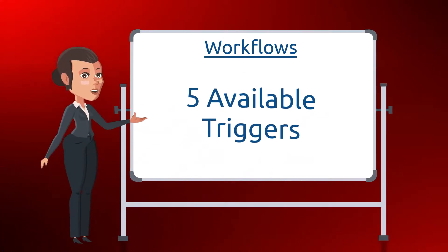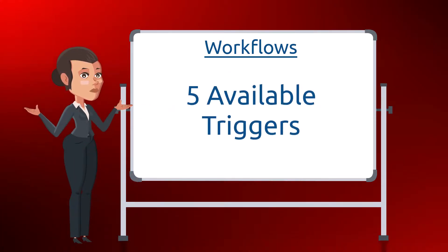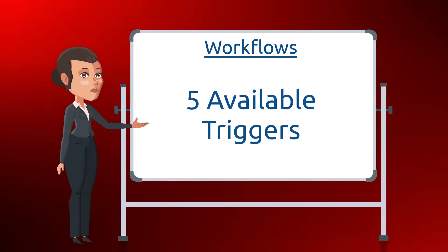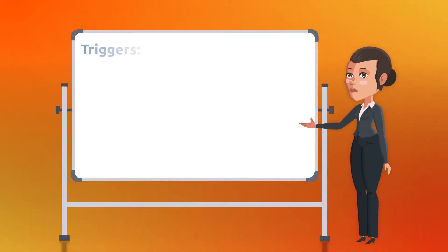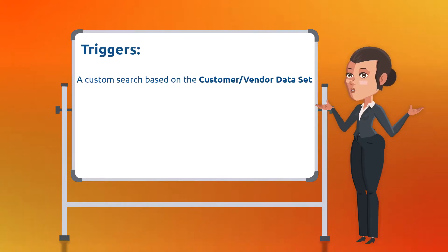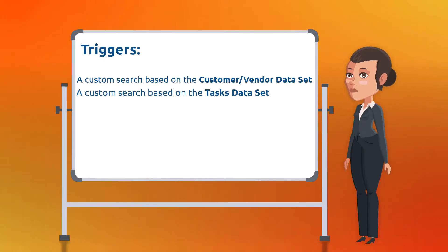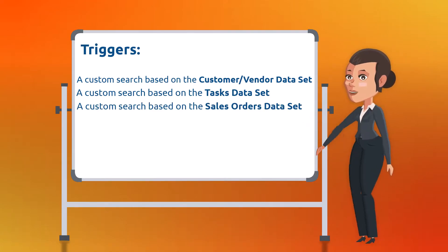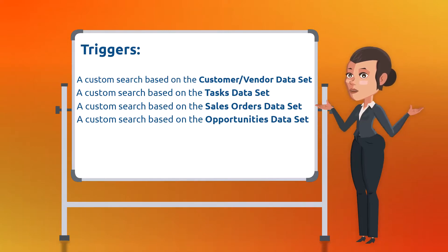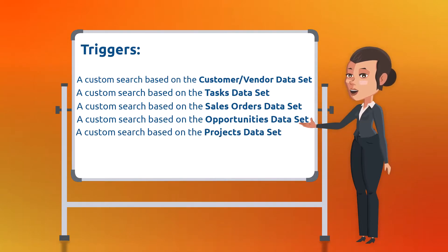At the time of this release there will be five triggers available, although more options may be added in future updates. These triggers include a custom search based on the customer and vendor data set, a custom search based on the tasks data set, a custom search based on the sales orders data set, a custom search based on the opportunities data set, or a custom search based on the projects data set.